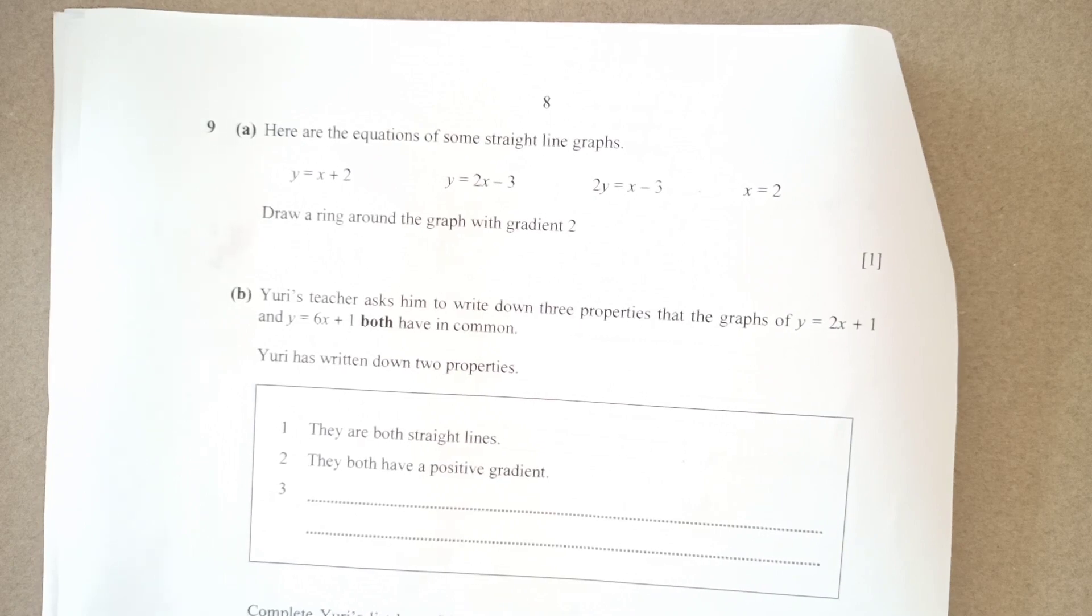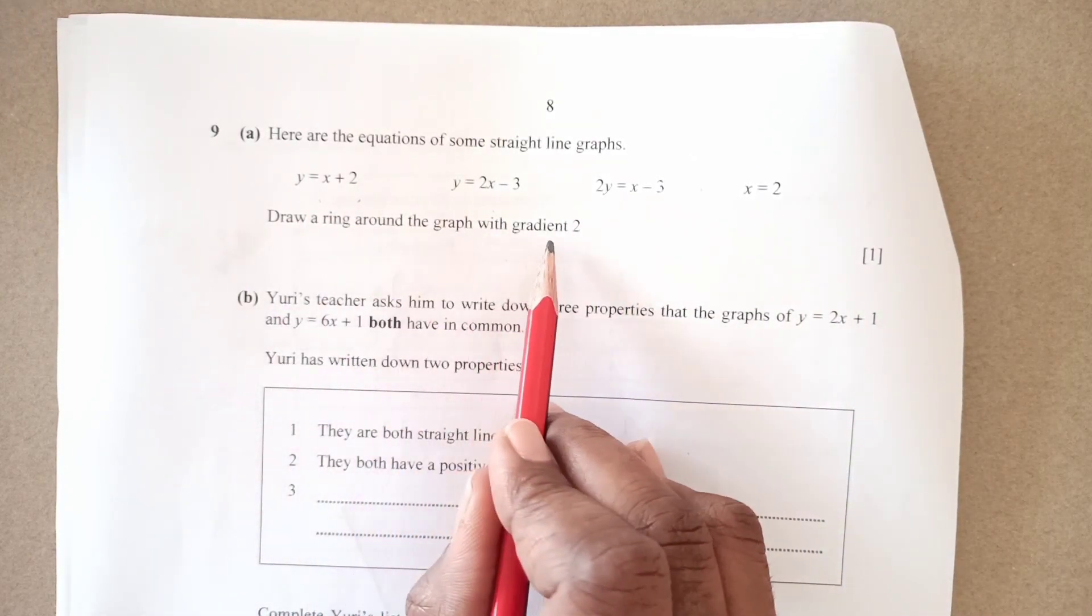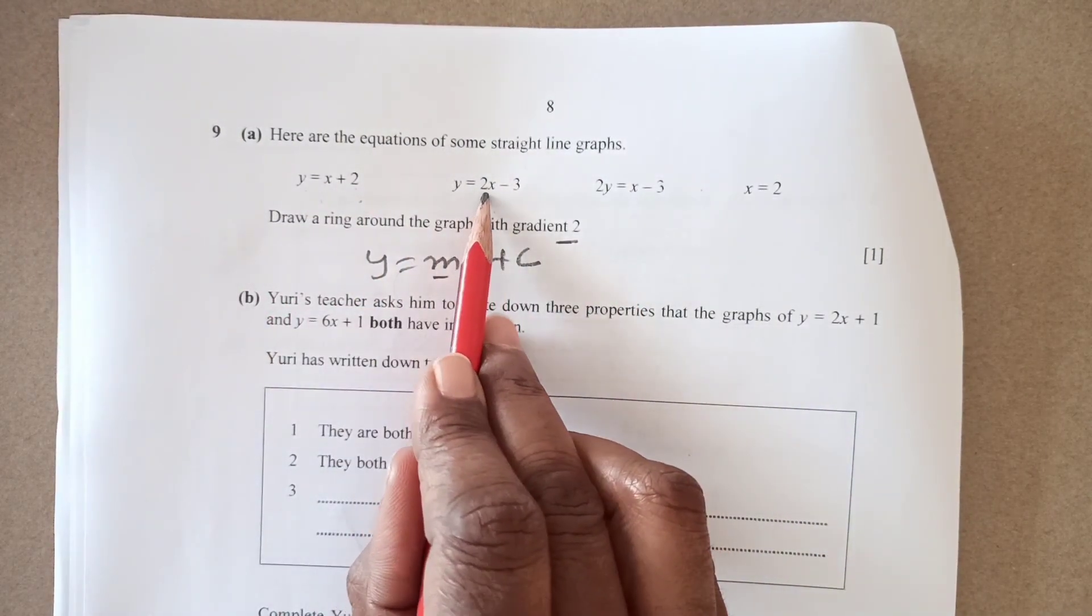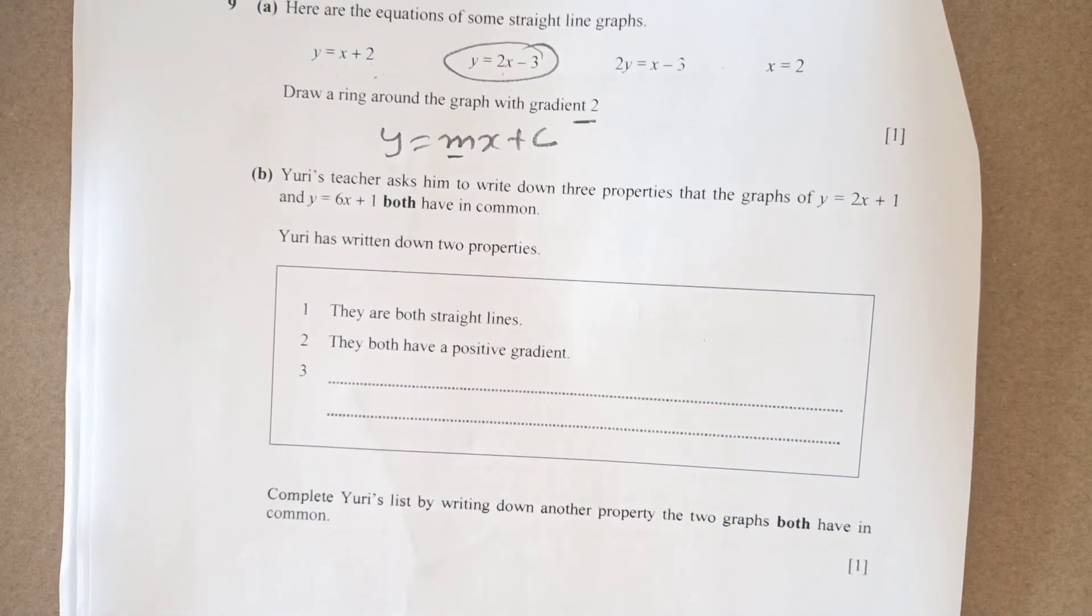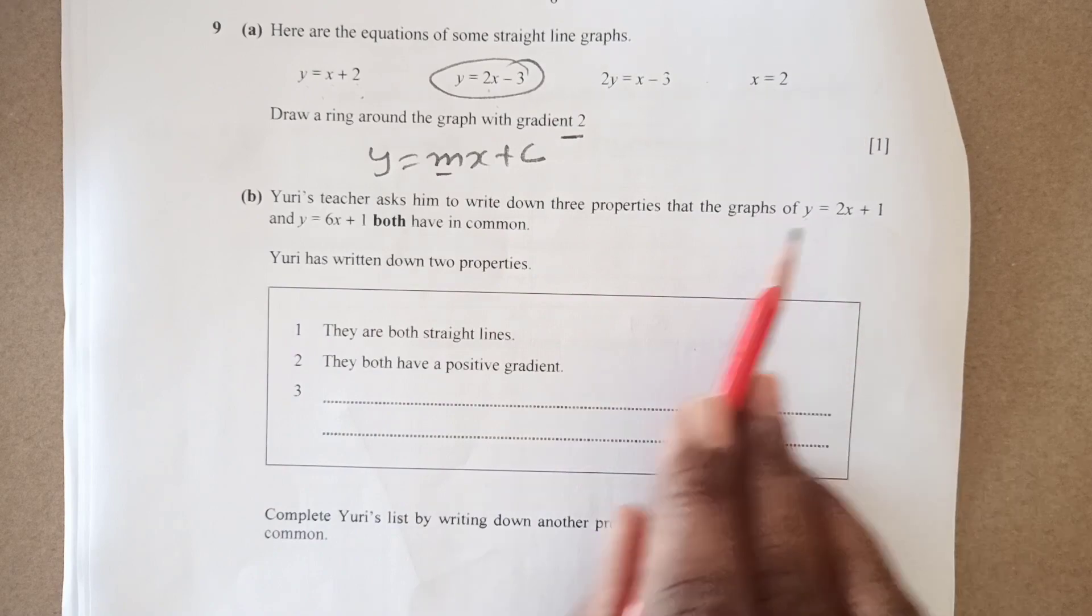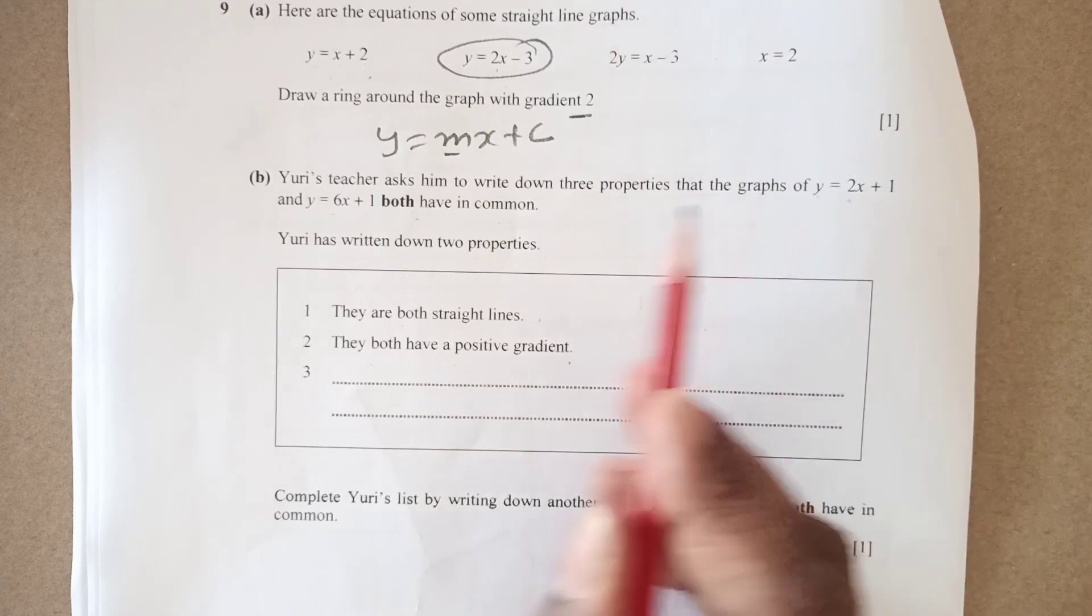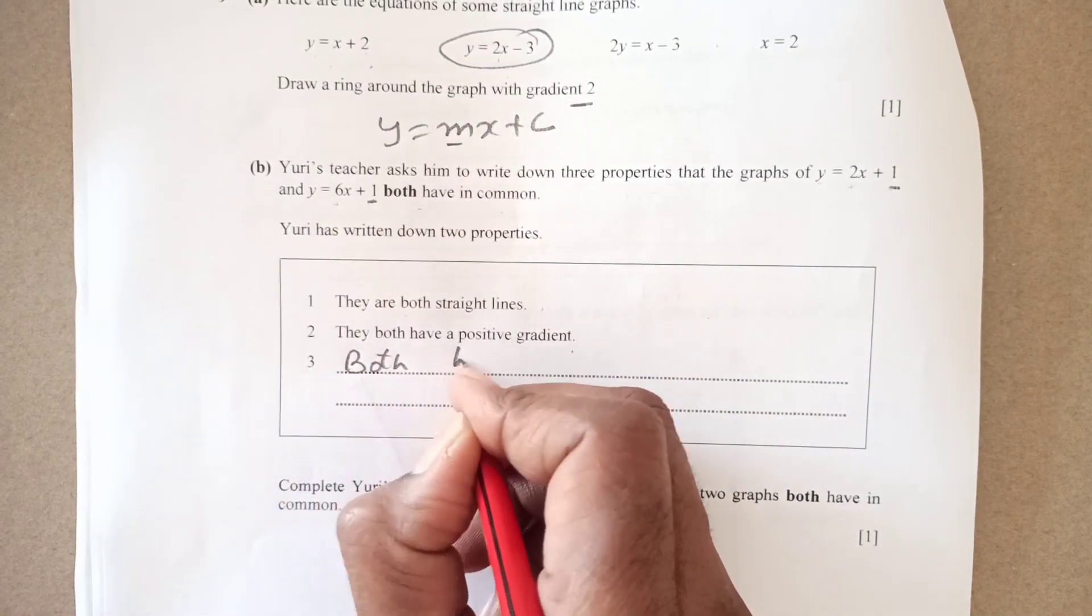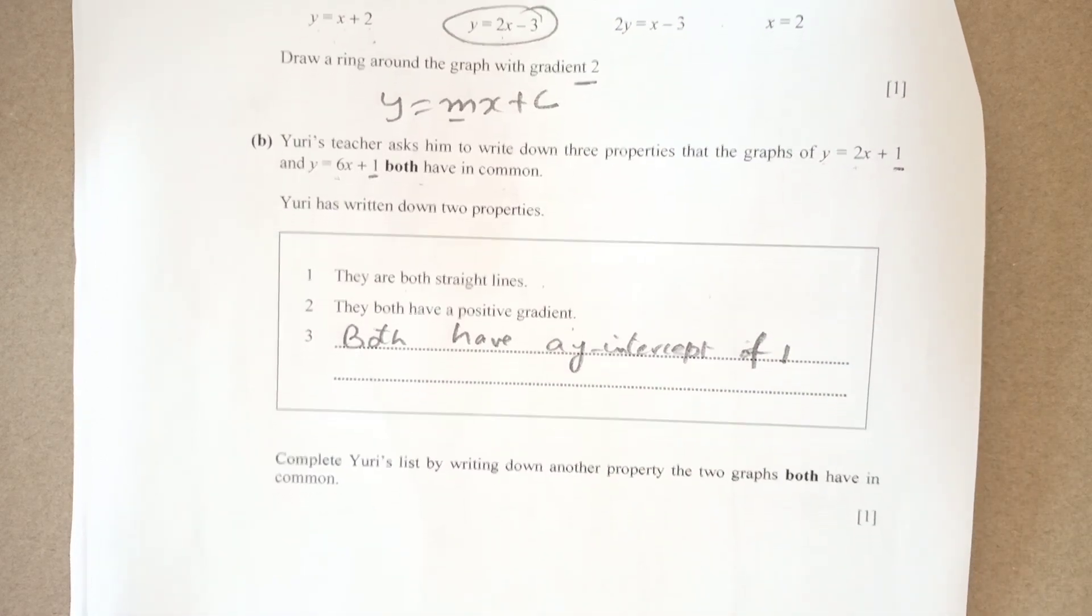Number 9 we have here is the equation of sum of the straight line graphs y equals to 2x plus 2 and y equals to 6x minus 3. Draw a ring around the graph with gradient 2. Gradient 2 y equals to mx plus c is the standard form. This is the gradient. y equals to mx plus c here. Here is gradient 2 in this one. Here we will divide by 2. So gradient will not remain 2. This is the final answer for that one. The Uri's teacher asks him to write down three properties of the graph y equals to 2x plus 1. We are looking for the common property. They are both straight lines. They both have positive gradient. Gradient is 2 here. Gradient is 6. And then if you compare this y intercept is also same. We can say both have a y intercept of 1.